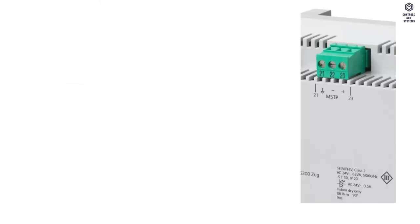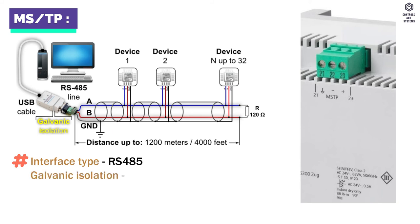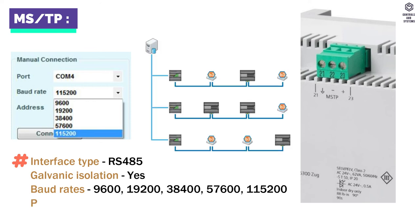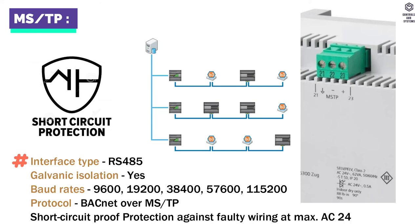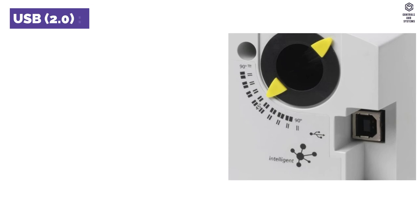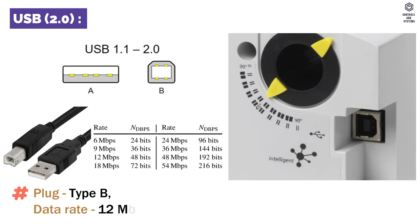Interfaces — MS-TP: interface type is RS-485, galvanic isolation is available. Baud rates are shown in the table. Protocol is BACnet over MS-TP. Short-circuit proof protection against faulty wiring at maximum AC 24V. USB 2.0: plug is type B, data rate is 12 Mbps.